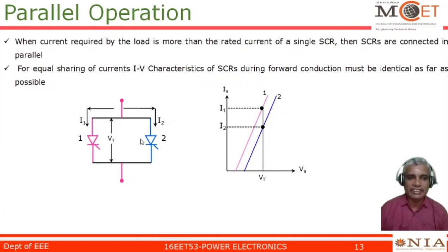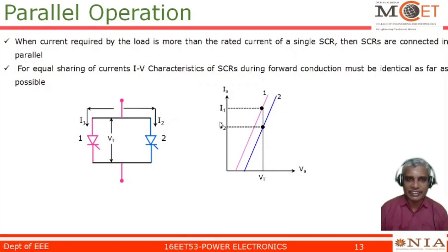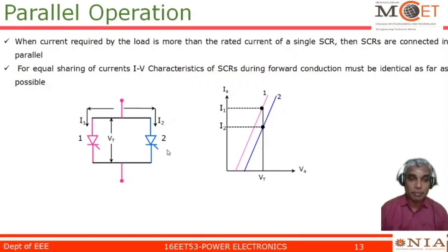Let us consider two SCRs connected in parallel. I am supposed to have I1 equal to I2, but it will not be so. The IV characteristics of SCR1 and SCR2 differ slightly. For the same terminal voltage, SCR1 carries current I1 whereas SCR2 carries current I2, and I1 is greater than I2. This means more current will flow through SCR1 and less through SCR2, so SCR1 may get damaged much faster. There should be some procedure to equalize the current distribution in the case of parallel operation of SCR.